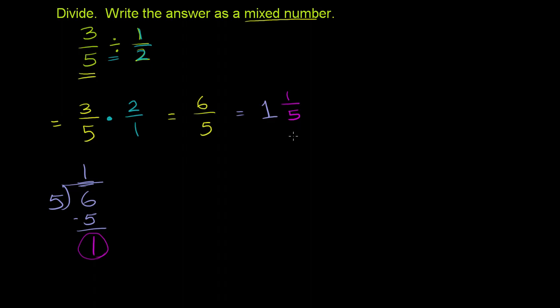Now the one thing that's not obvious is why did this work? Why is dividing by 1 half the same thing as multiplying, essentially, by 2? 2 over 1 is the same thing as 2. And to do that, I'll do a little side, fairly simple example, but hopefully it gets the point across.